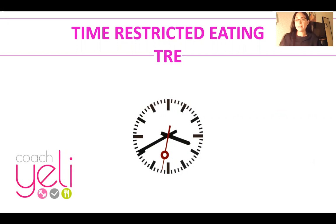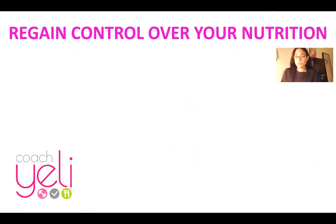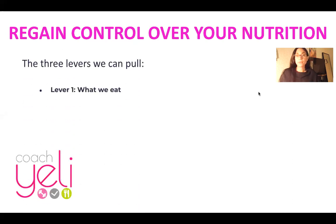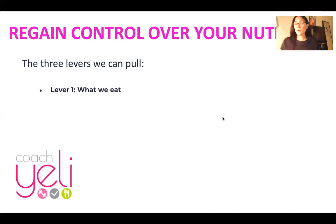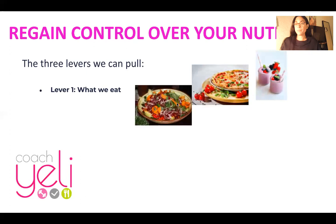Before we dive in, something I want to clarify. I've learned through lots of reading and studying that there are three ways you can regain control over your nutrition — three parameters or variables you could play with. The first one is what we eat. So maybe you have salads, eat pizza, eat smoothies, or you refrain from animal protein, or you don't have dairy, or you limit something you presently eat.